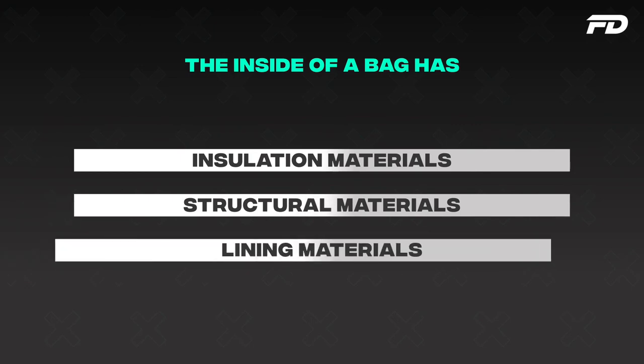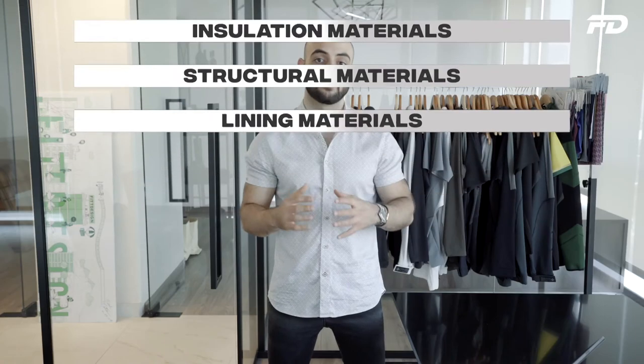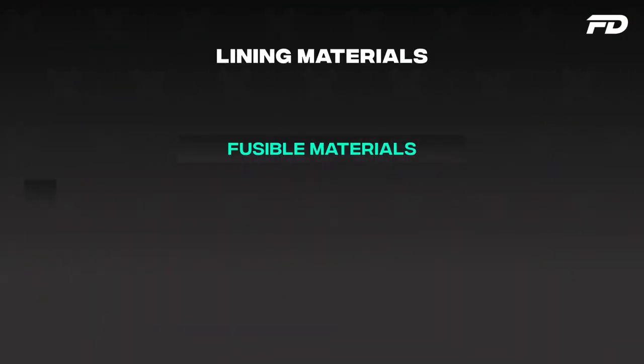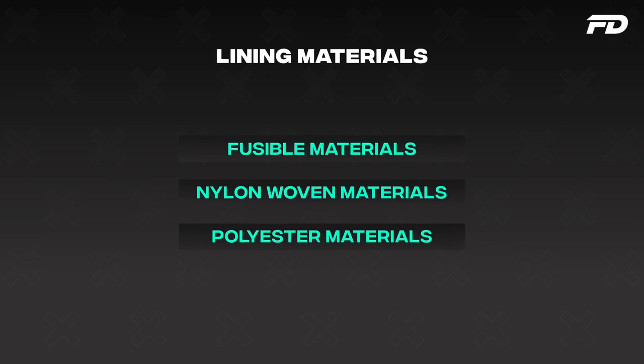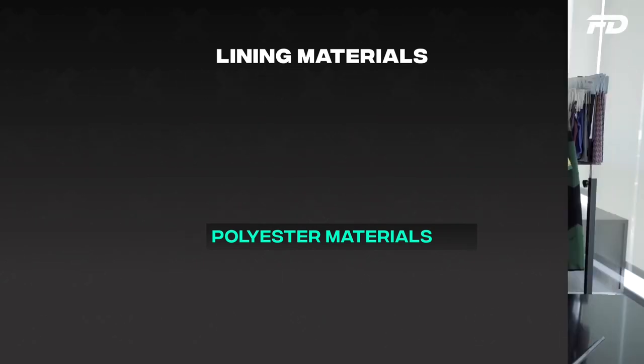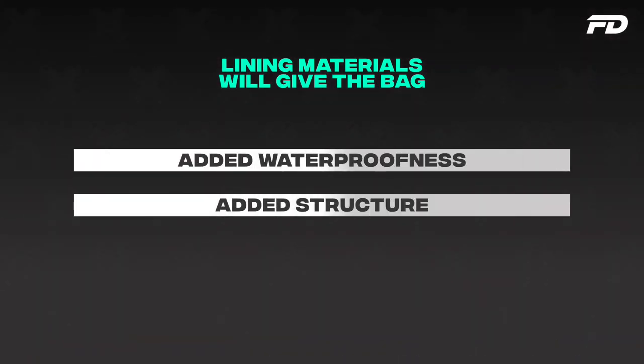Now that we've discussed exterior facing materials, we'll look at the interfacing materials. The construction of a bag can be quite complex — we have the exterior facing fabrics, and on the inside we have our insulation materials, structural materials, and lining materials. We'll look at those three categories, starting with lining materials. Usually on lining materials you either see woven or sometimes non-woven, knitted lining materials made out of nylon or polyester — fusible materials that give your garment added waterproofness, added structure, and help separate your contents inside the bag from the exterior.